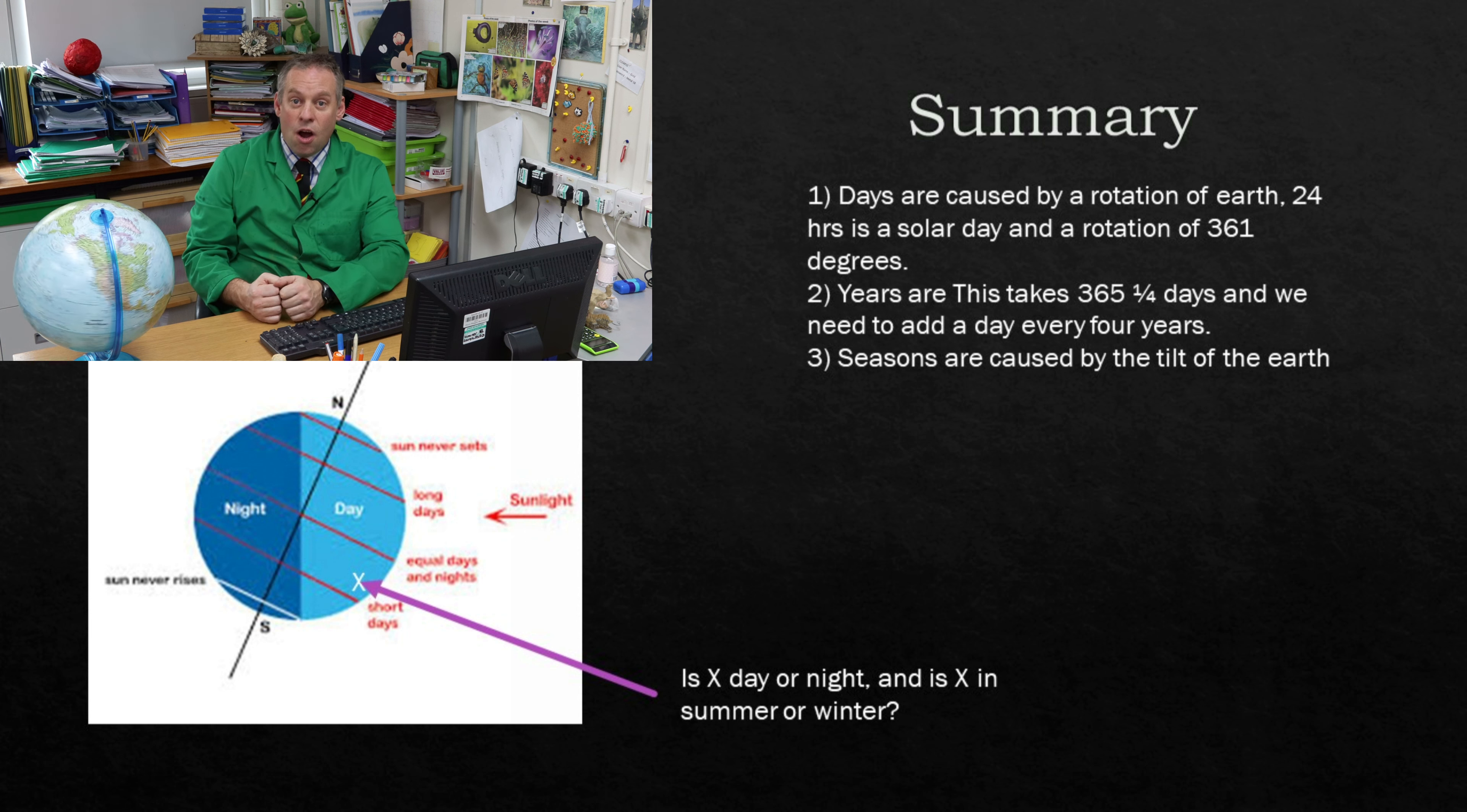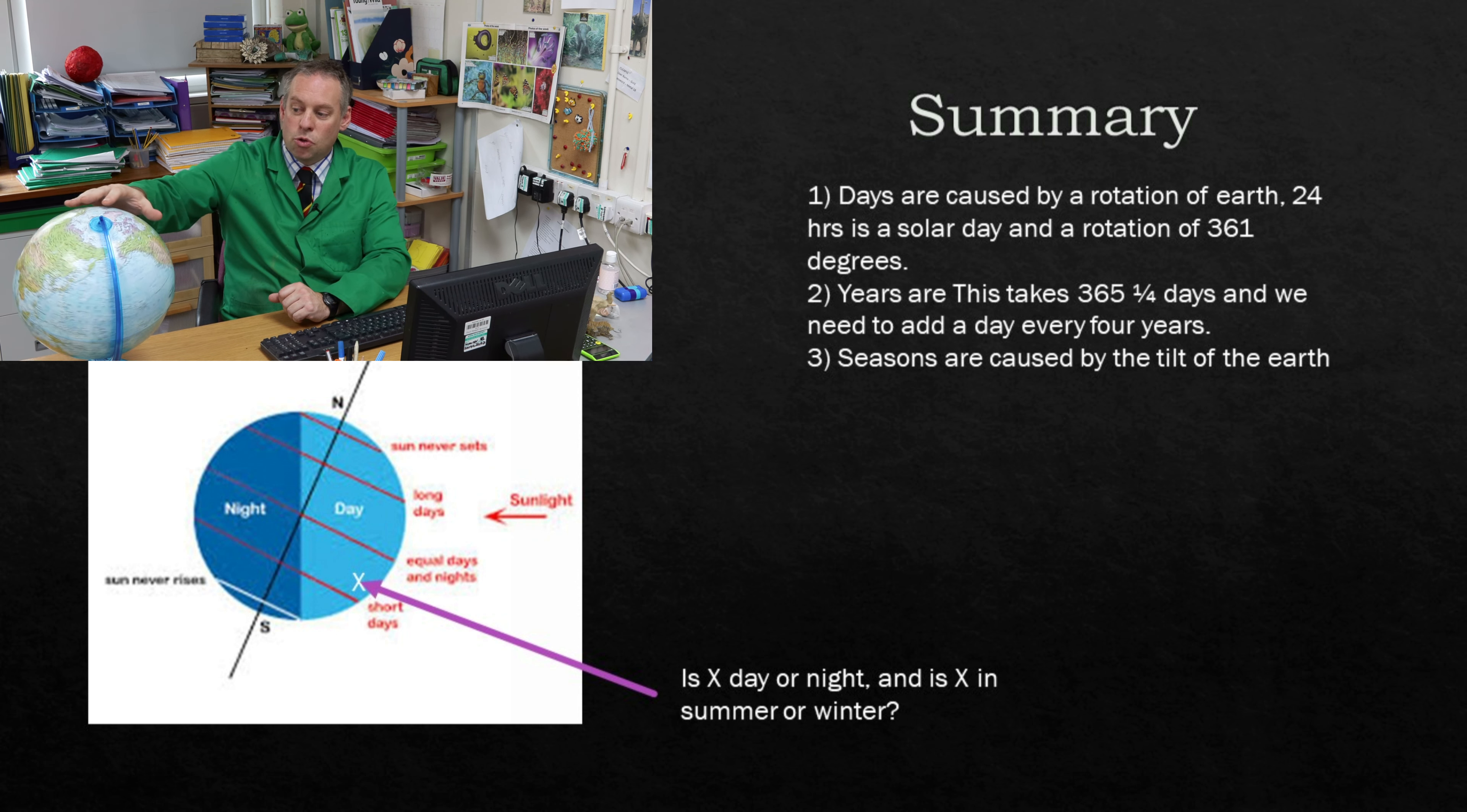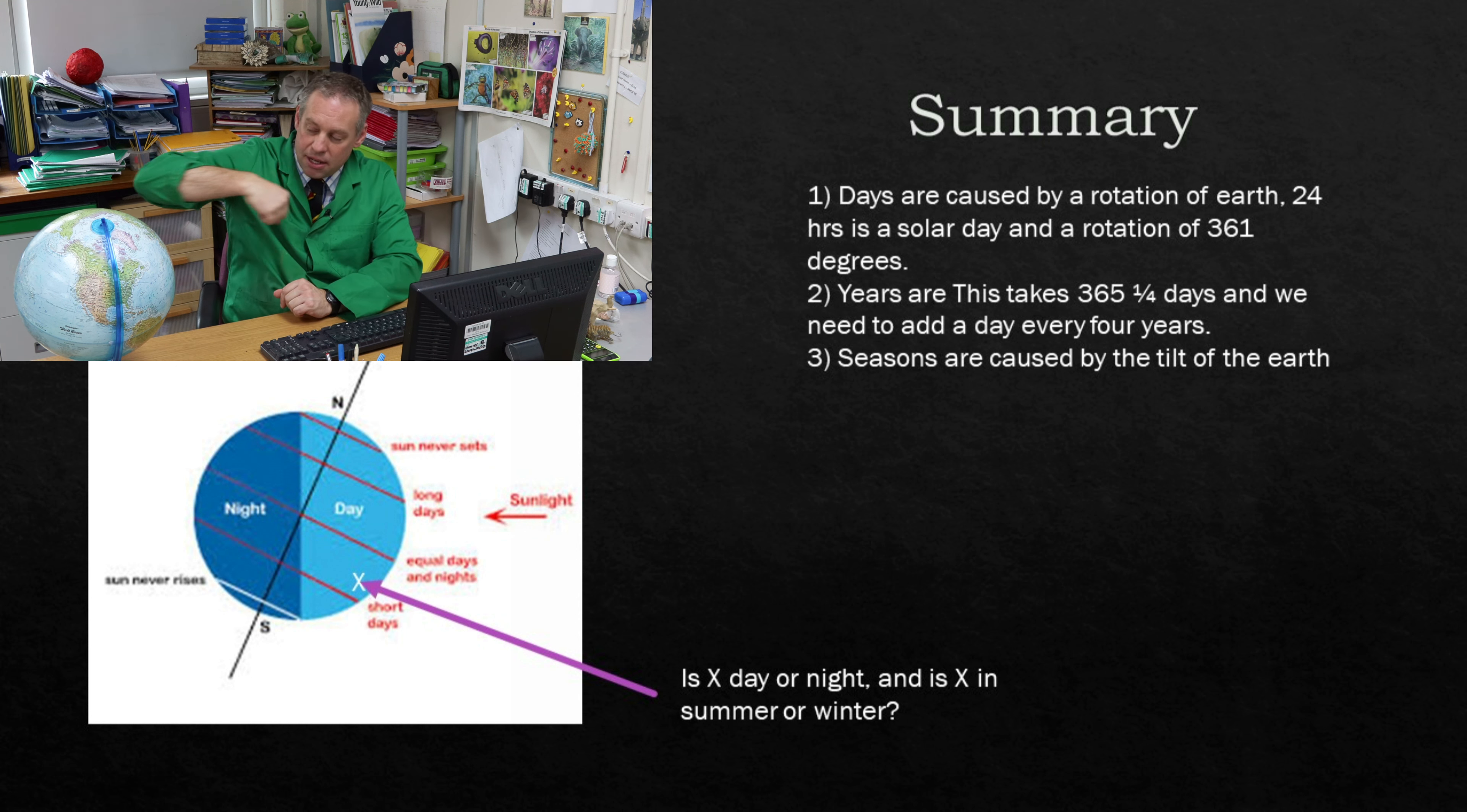We talked about the difference between a sidereal day of being 23 hours 56 minutes and a solar day which is where the sun's the highest to the sun's the highest. That takes 24 hours. We talked about that one degree extra spin to make it into a solar day.